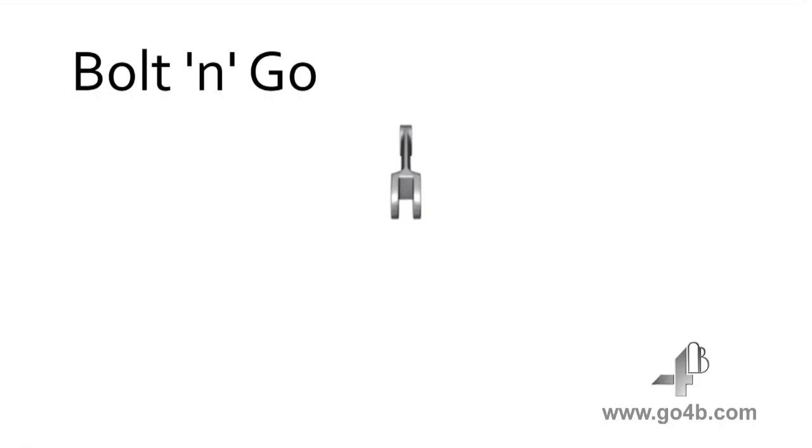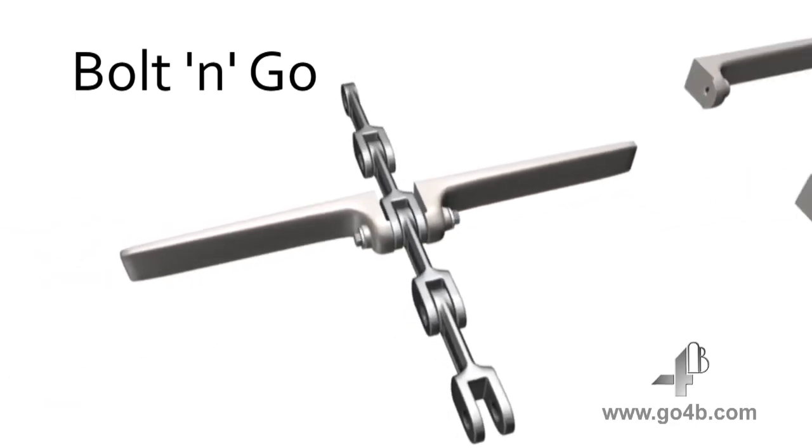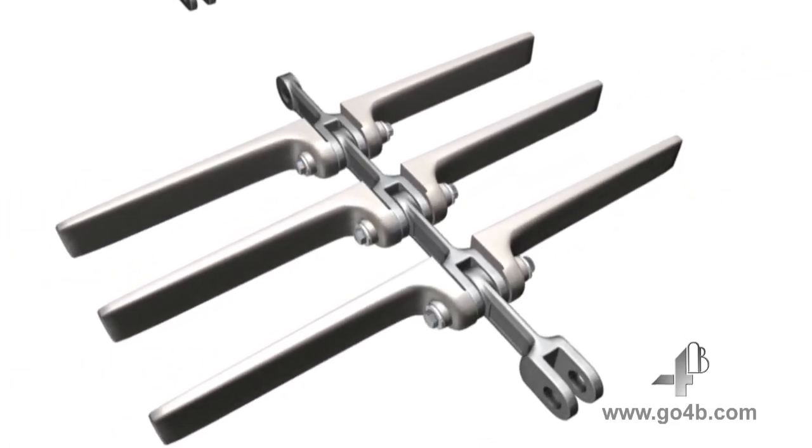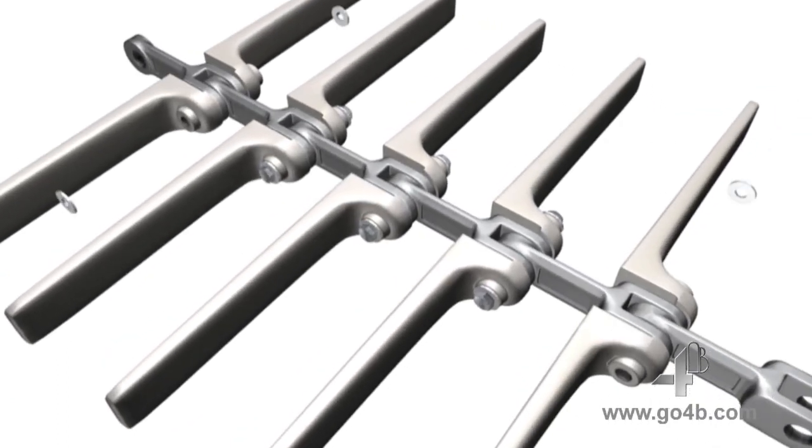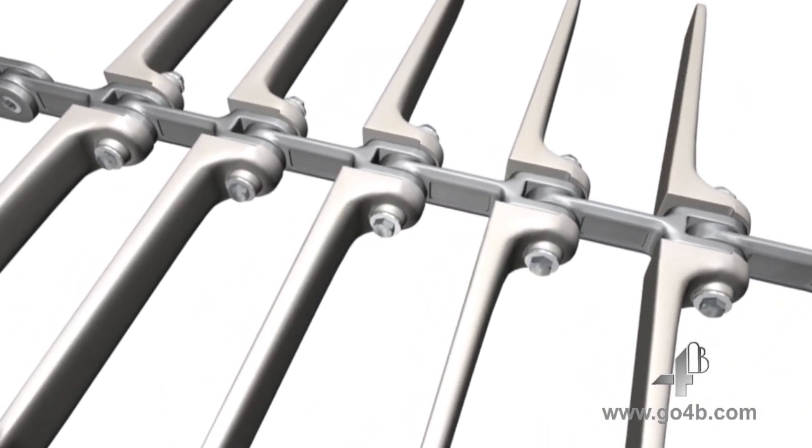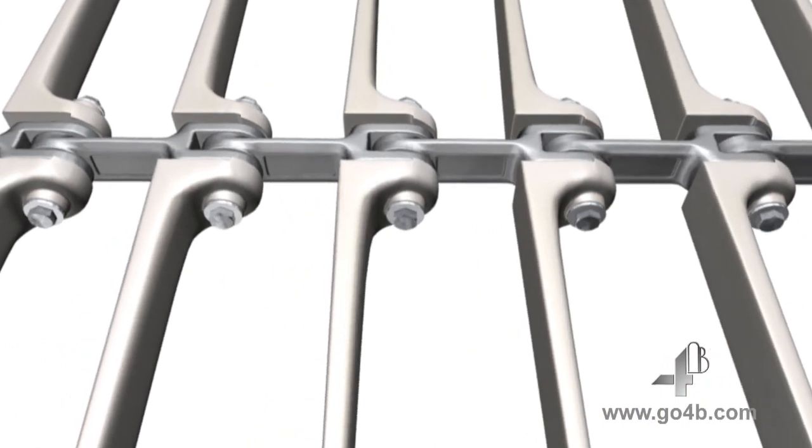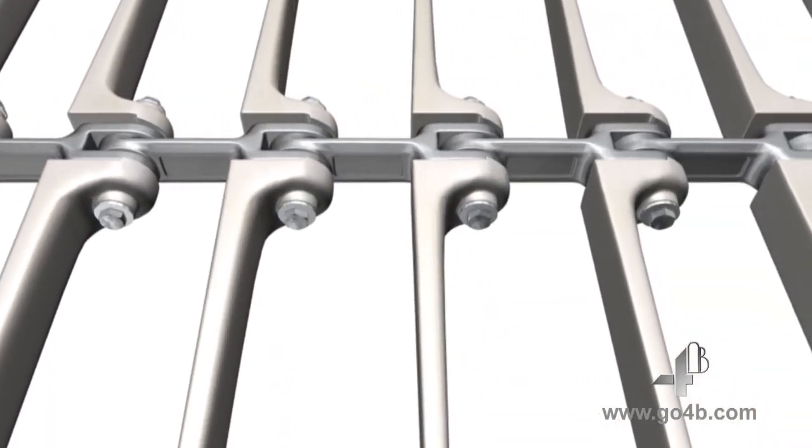The flagship of 4B's chain range is our acclaimed and patented Bolt & Go system. This revolutionary new method for flight installation and chain assembly uses hollow pins and bolts instead of welding, providing significant benefits.